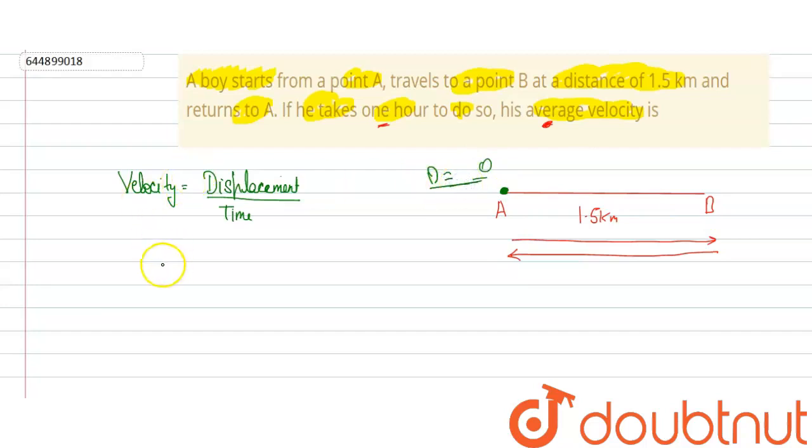So now what is our velocity? If displacement is 0, then what is our average velocity? 0.